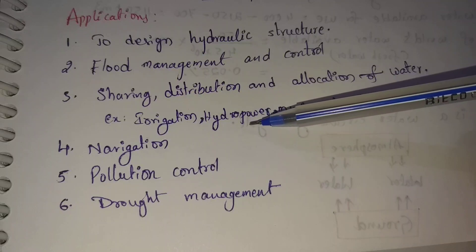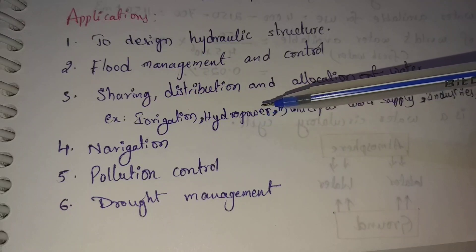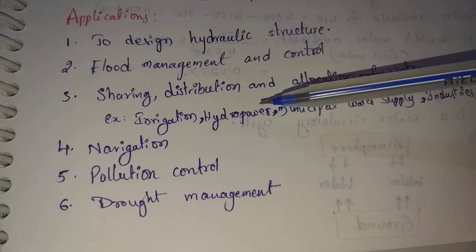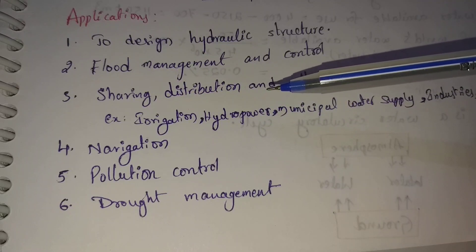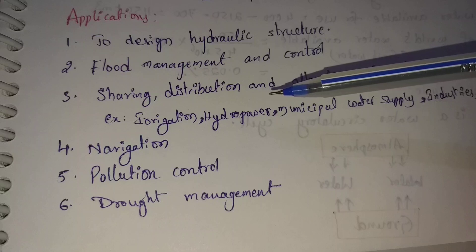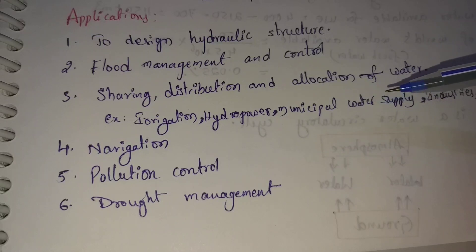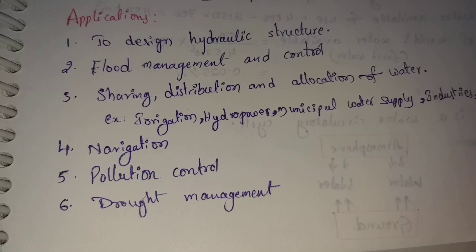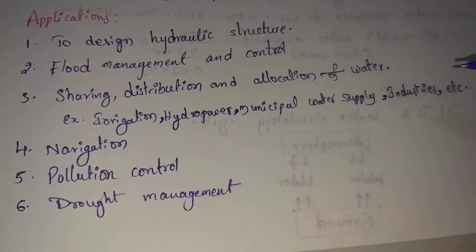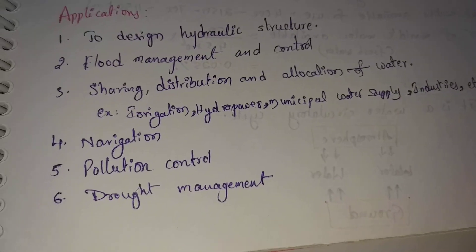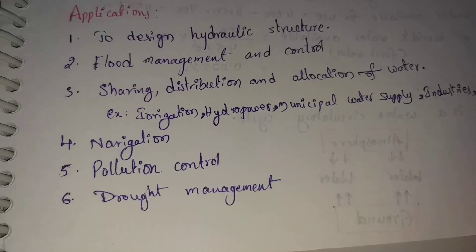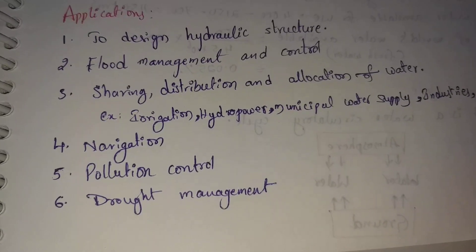We use the water for hydropower. These dams are used for hydropower generation. That is municipal water supply. Next, industries — we provide water and electricity to industries.